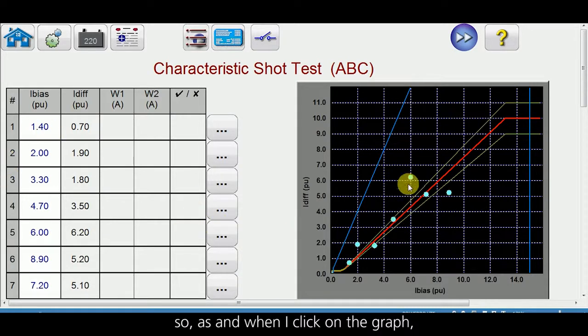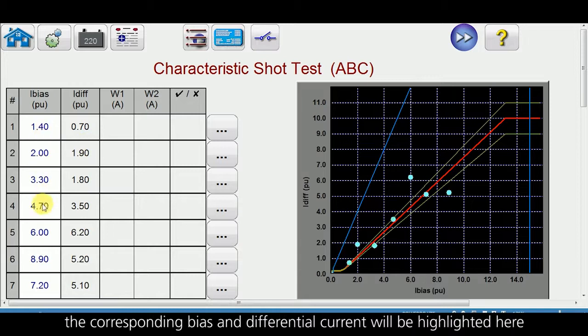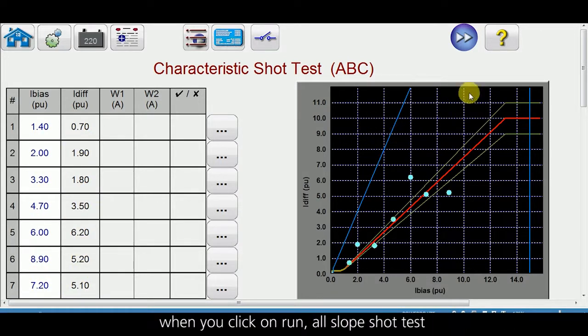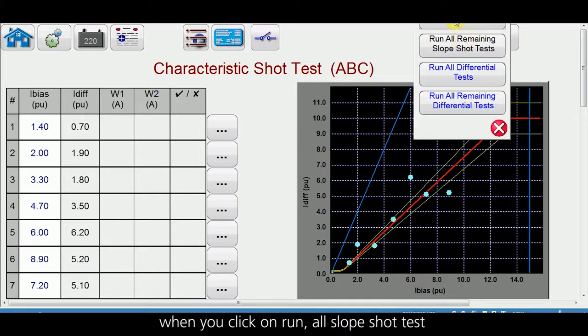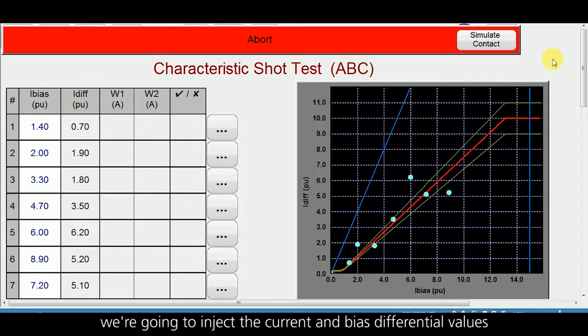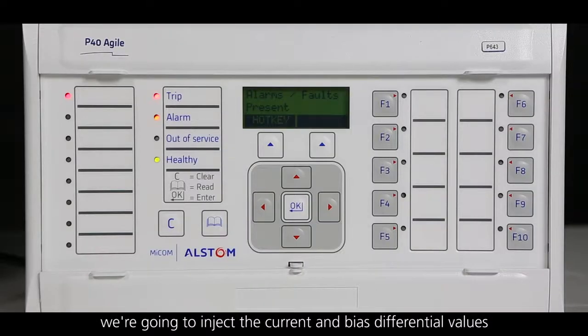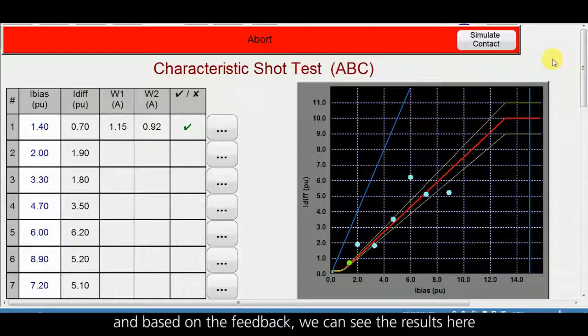As and when I click on the graph, the corresponding bias and differential current will be highlighted here. When you click on run all slope shot test, we are going to inject the corresponding bias and differential values, and based on the feedback we can see the results here.